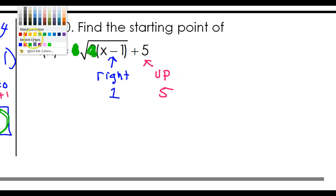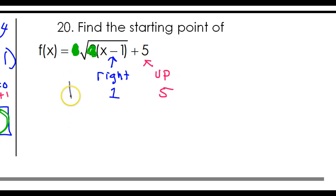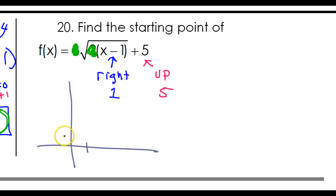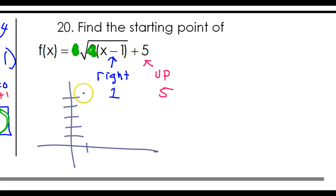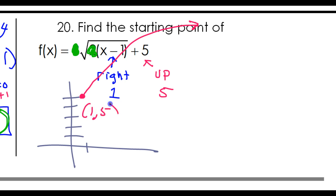If you look at that — right 1, up 5 — 1, 2, 3, 4, 5. So this is going to be your endpoint right here. It's going to go on and do whatever it does from there. The endpoint is going to be 1, 5. That's it.